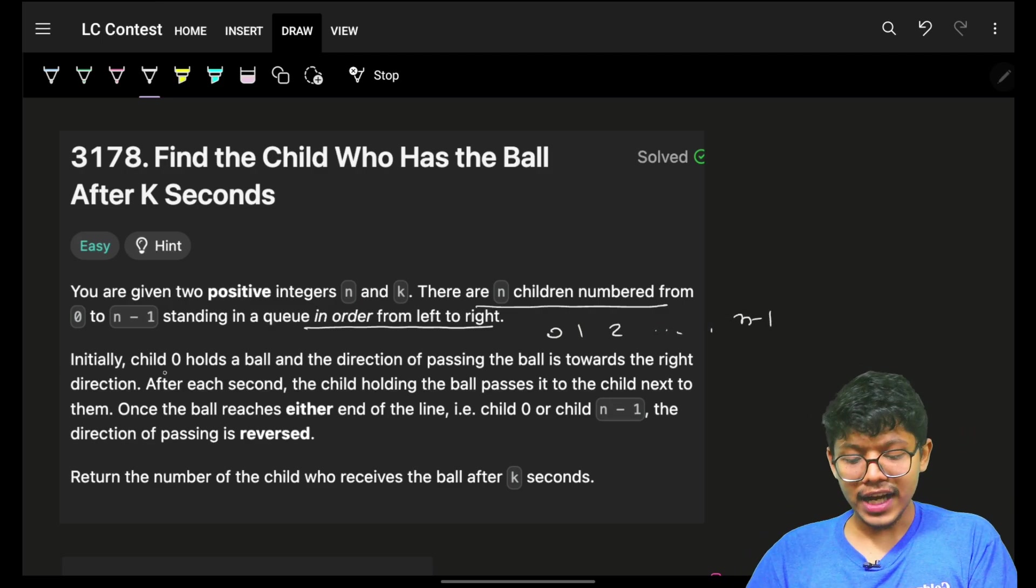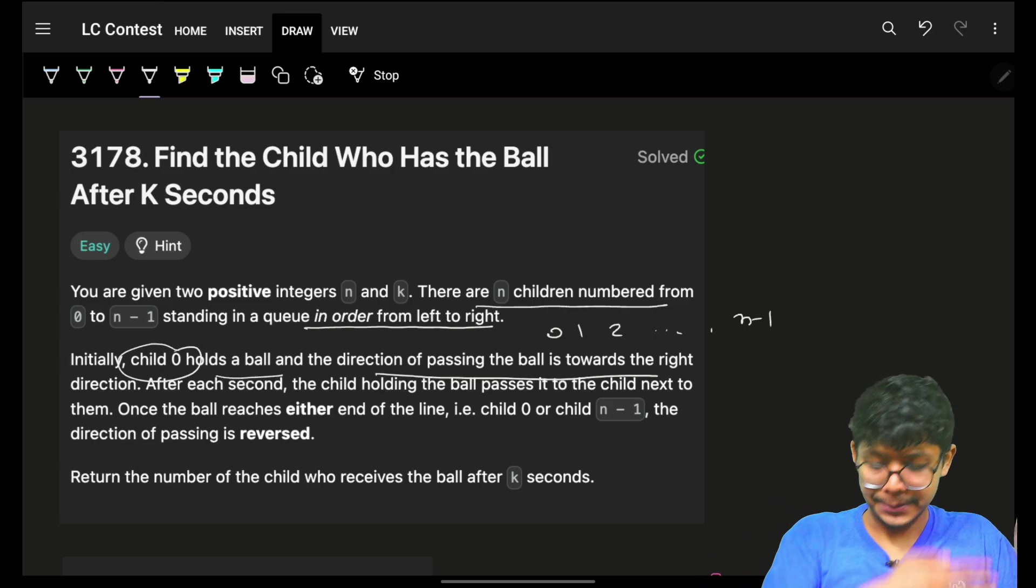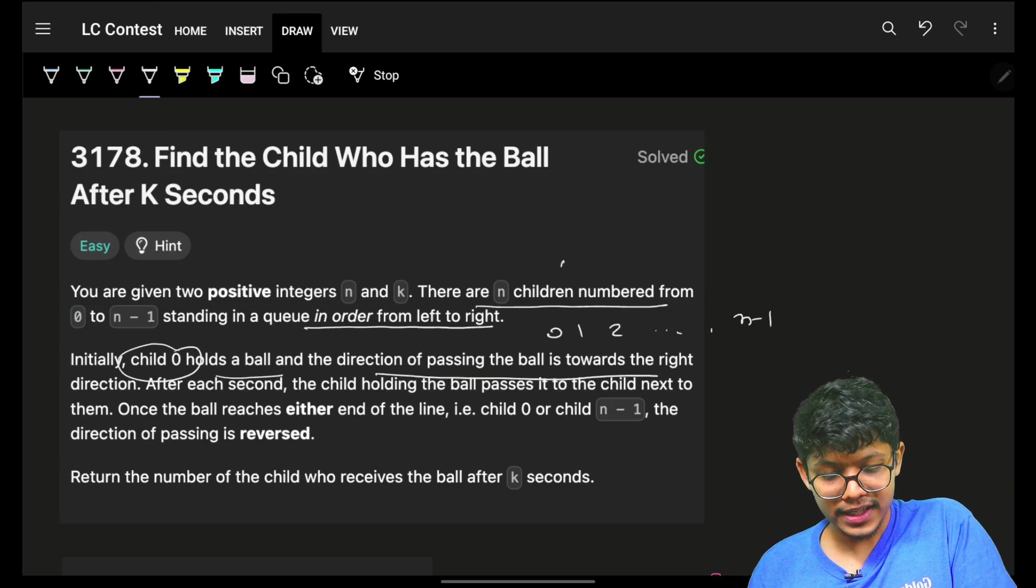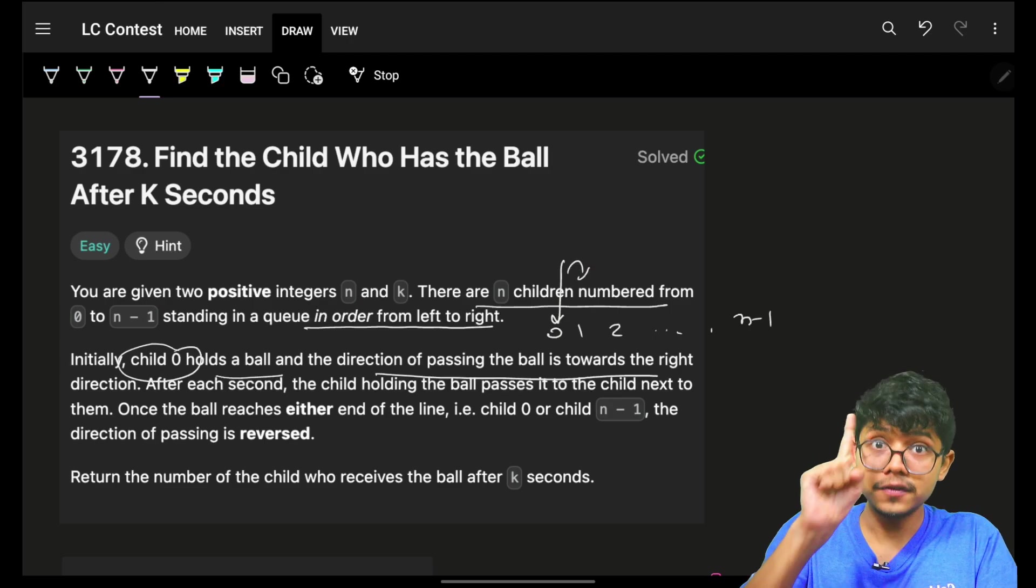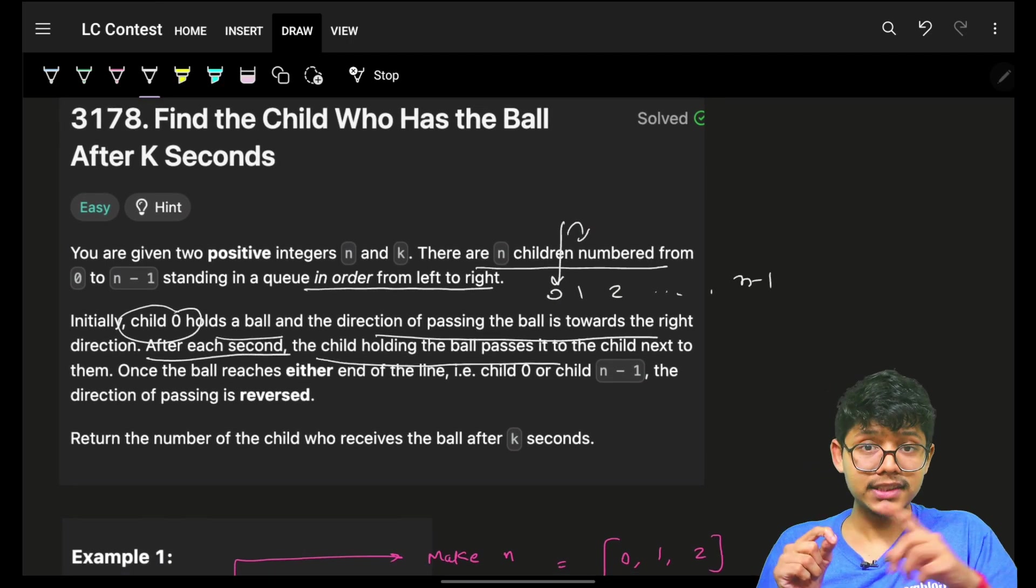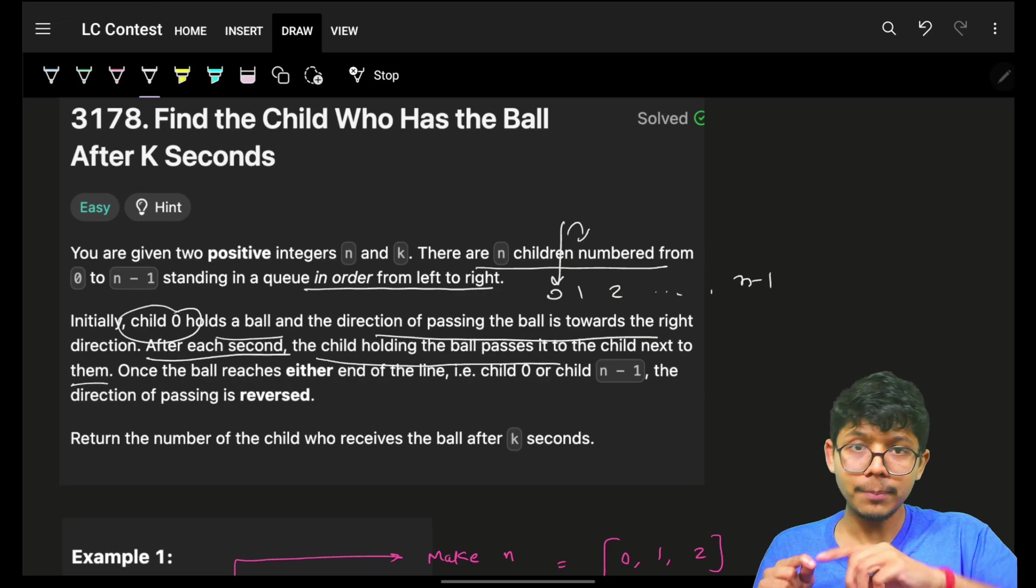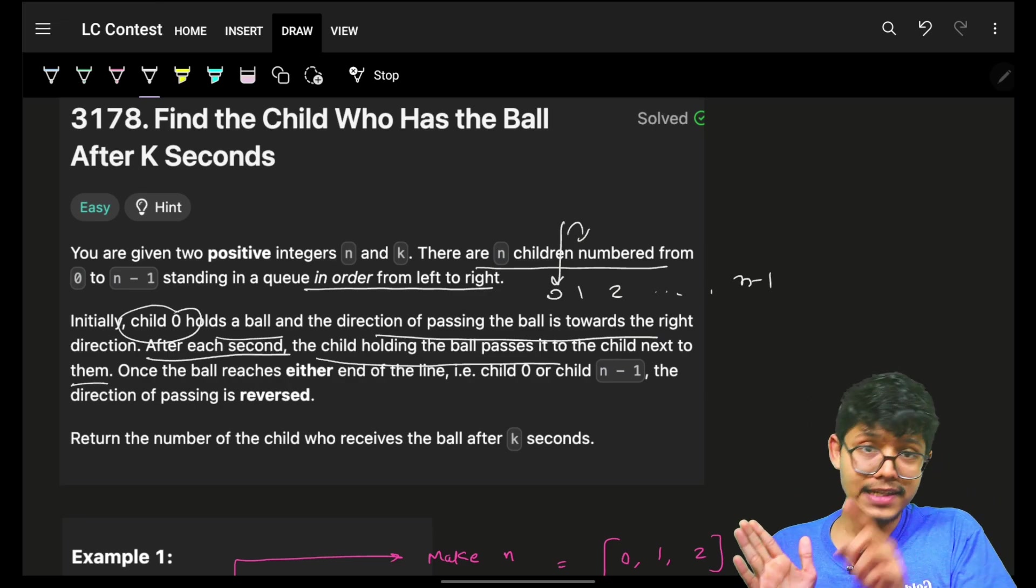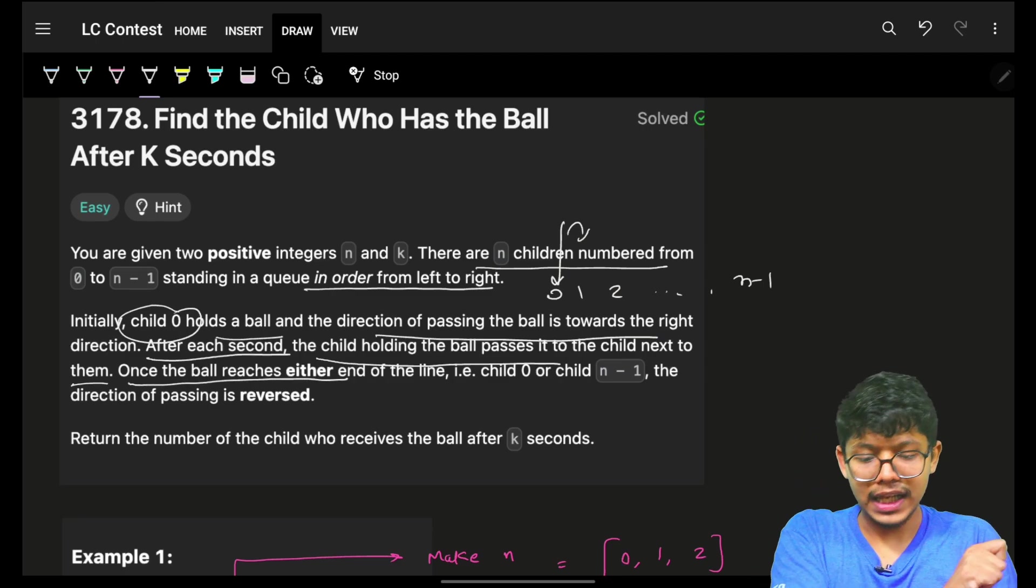Now, initially, child 0 holds the ball and the direction of passing the ball is towards right, which means this child is holding the ball and he will pass the ball towards right in the first second. After each second, the child holding the ball passes it to the child next to them. The passing is done as a right pass in the very beginning.